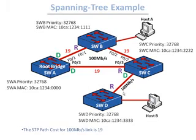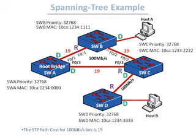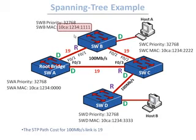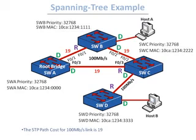For ports connected to end hosts, switches determine there is no chance of a loop, so those ports are made designated forwarding. There is still a loop between switch B and switch C, so they must compare priorities and MAC addresses to determine which port to block. Since switch B's MAC address is lower than switch C's, switch B gets the designated port and switch C gets the blocking port.